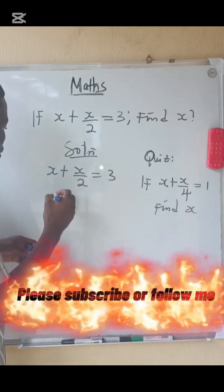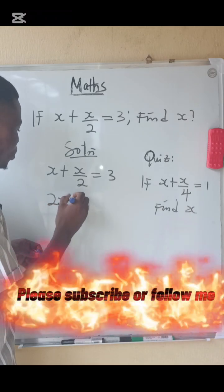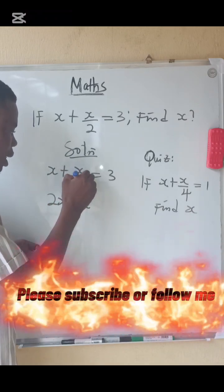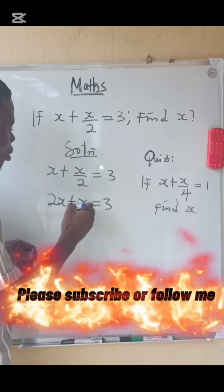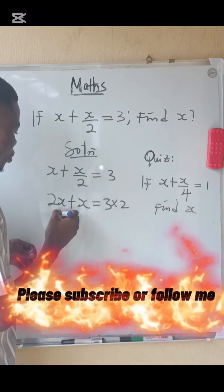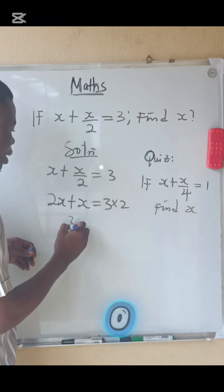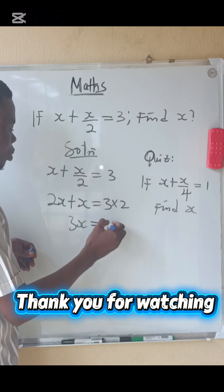So we have 2x plus x. Remember that that 2 will cancel this 2 that is here, then equals 3 times 2. So 2x plus x, that is 3x, equals 3 times 2, that is 6.